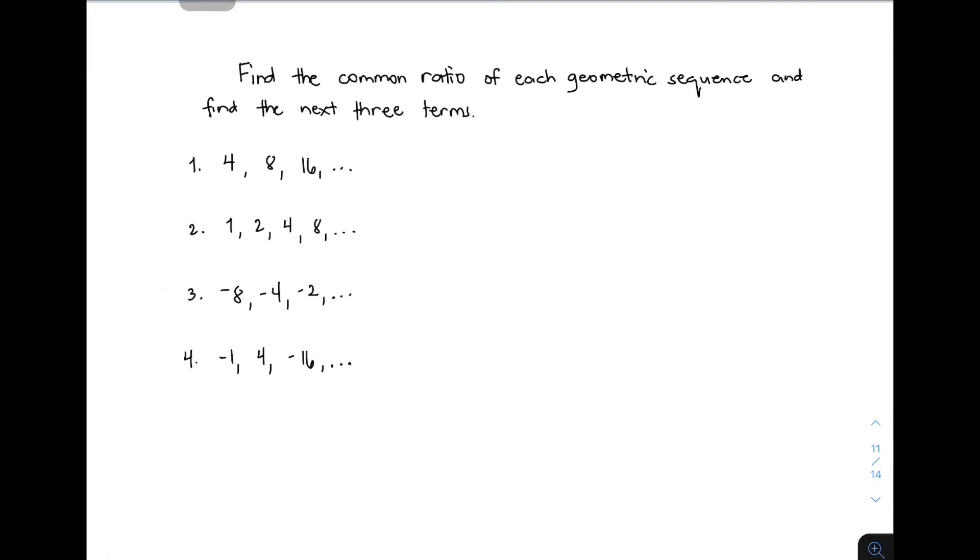The problem says: find the common ratio of each geometric sequence and find the next three terms. How do we find the common ratio? If you have 4, 8, and 16, simply r = 8 ÷ 4, which gives you 2. To verify the common ratio is 2, you can also divide 16 ÷ 8, which equals 2. Therefore, the common ratio is 2.